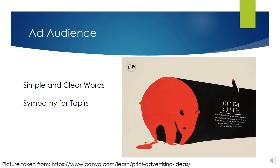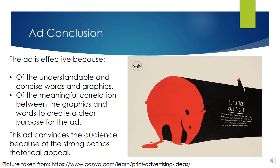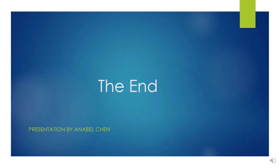The audience is ordinary people, especially those who are interested in helping dying animals, because the ad shows the death of tapirs by deforestation. The ad properly reaches the audience through understandable language and simple sentences. The ad is effective because of its understandable and concise words and graphics, and the meaningful correlation between the graphics and words that creates a clear purpose. This ad convinces the audience because of its strong pathos rhetorical appeal. The ad is effective.